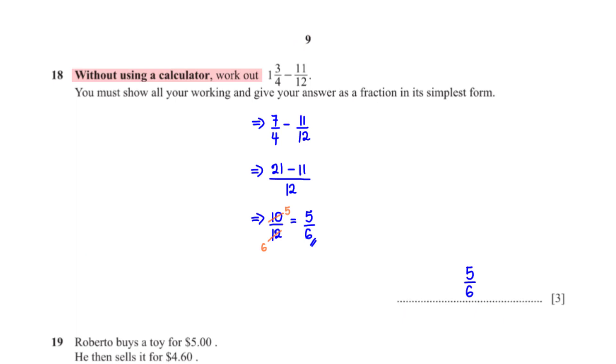Without using a calculator, work out 1 and 3 over 4 minus 11 over 12. You must show all your working and give your answer as a fraction in its simplest form. First, we need to convert the mixed fraction 1, 3 over 4 into an improper fraction. So 4 times 1 plus 3 is 7 divided by 4. The LCM of 4 and 12 is 12.